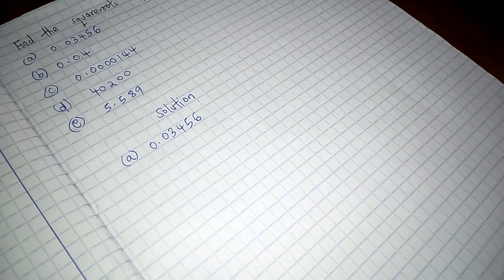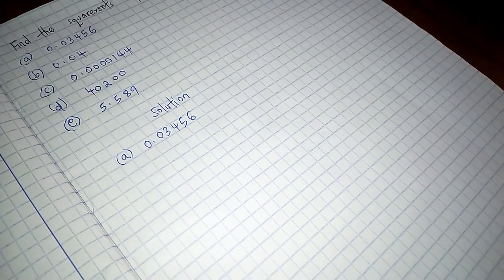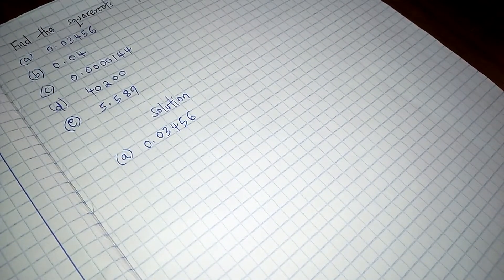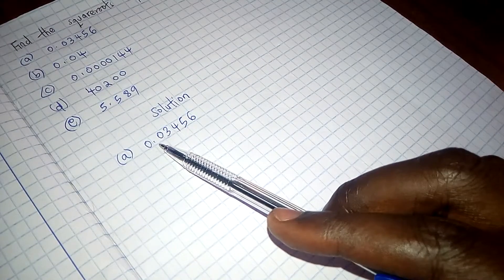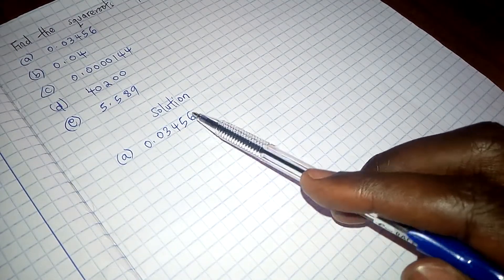So let us straight away start by doing the first example and we want to get the square root of 0.03456.